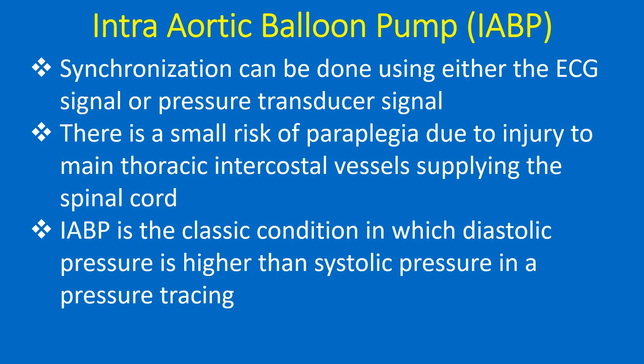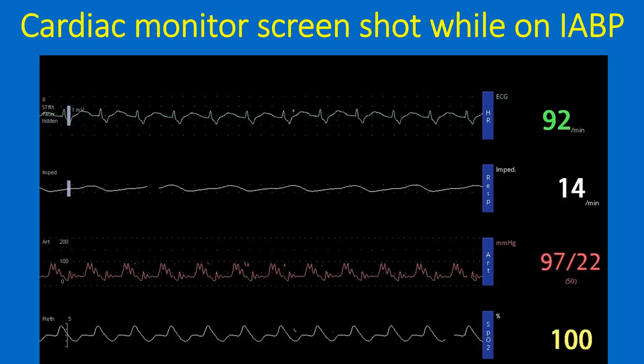IABP produces the classic condition in which diastolic pressure is higher than systolic pressure on a pressure tracing. This is visible on the cardiac monitor screenshot while the patient is on IABP.